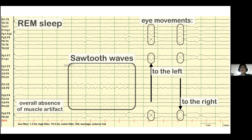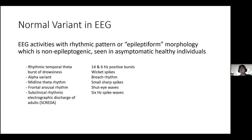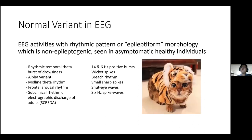There are normal variants in EEG — EEG activity with rhythmic patterns or so-called epileptiform morphology that are indeed non-epileptogenic, seen in asymptomatic healthy individuals. We need to know these because we don't want to mistake a normal variant as something abnormal, leading to overtreatment, wrong diagnosis, and a wrong label that follows the patient for the rest of his or her life. Think of normal variants as a kitten wearing a tiger costume — the tiger is the epileptiform abnormality, and the kitten is the normal variant. Do not mistake a kitten for a tiger.